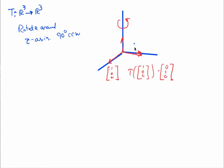And likewise, when I rotate this guy here, this is (0,1,0), it's going to end up back in this direction in the negative x-axis part. So the transformation of (0,1,0) will be (-1,0,0).